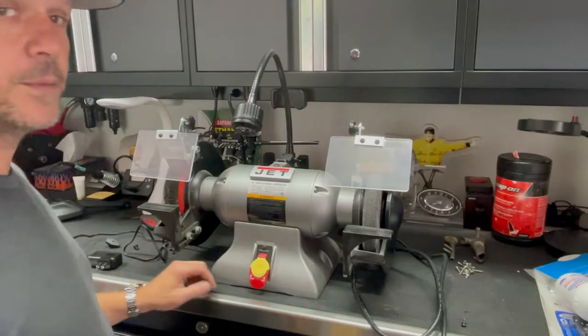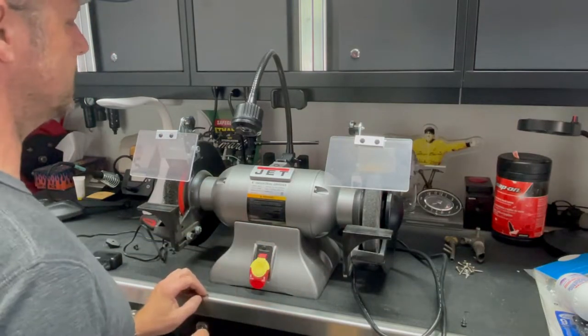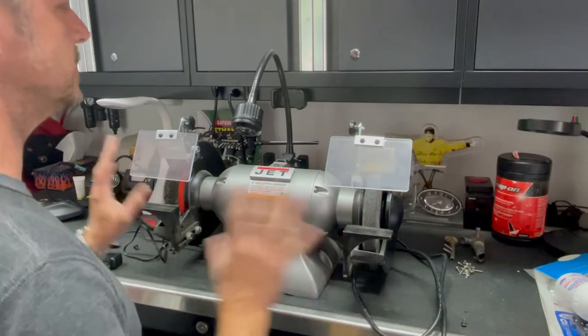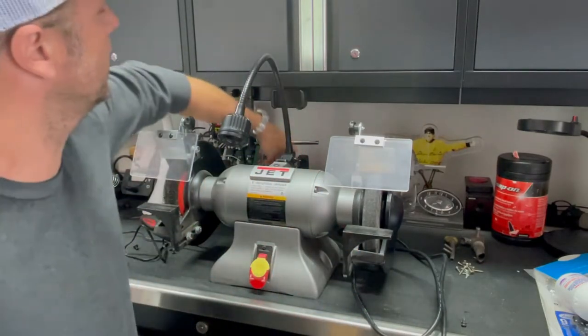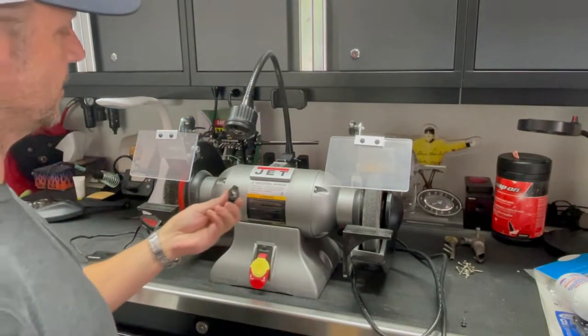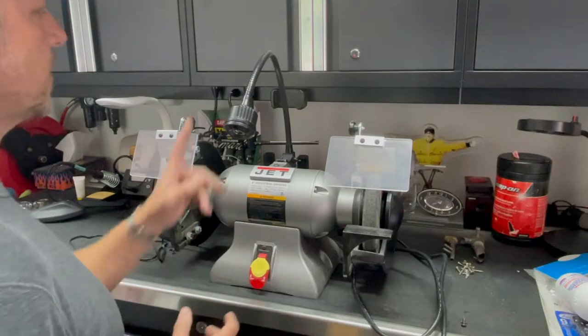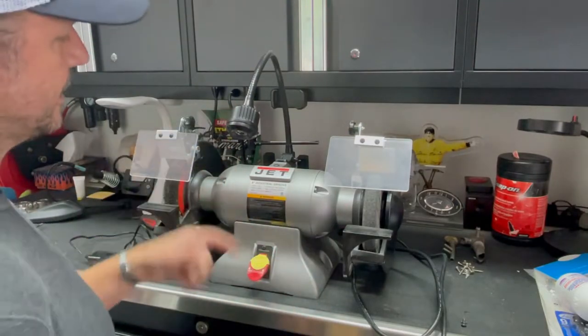Welcome back to Restomod 101. Today we're going to do an upgrade to our Jet 8-inch industrial bench grinder. We love this thing, we use it all the time. We even got the LED work light with it. One thing we didn't really like is on the end of the wire of the work light was one of these little dial switches to turn it on. What I'm going to try to do is wire this light directly to the power switch so when you flip this, the grinder comes on and the light comes on.